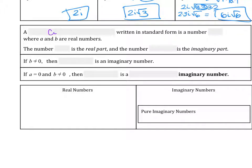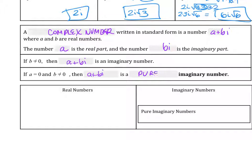A complex number written in standard form is a plus bi, where a and b are real numbers. The number a is the real part and bi is the imaginary part. If b does not equal 0, then a plus bi is an imaginary number. If a equals 0 and b does not equal 0, then bi is a pure imaginary number. Examples of real numbers are negative 1, pi, 5/3, and root 2. Imaginary numbers include 2 plus 3I and 9 minus 5I. Pure imaginary numbers are negative 4I and 6I.